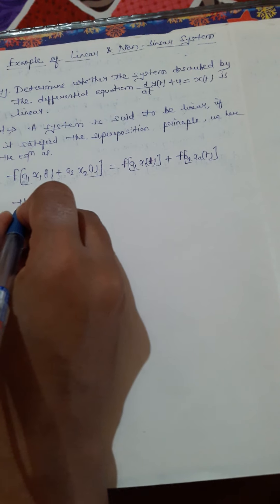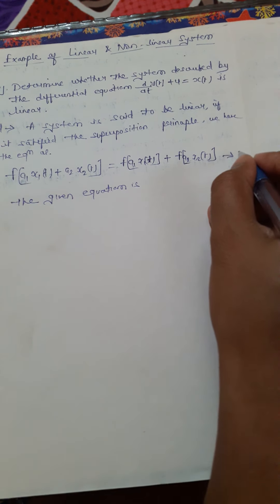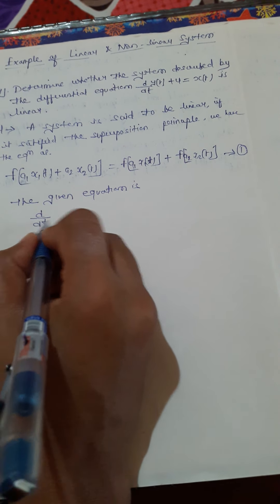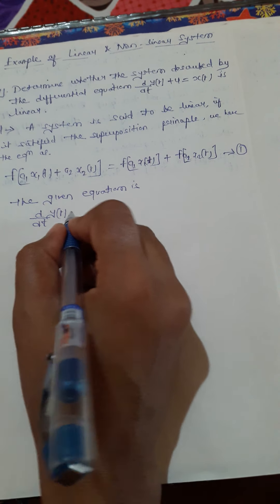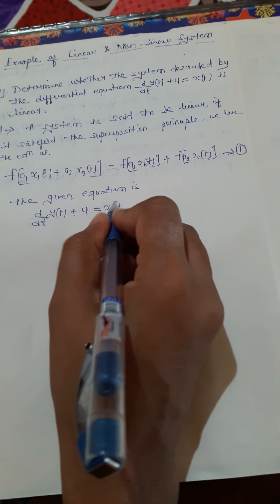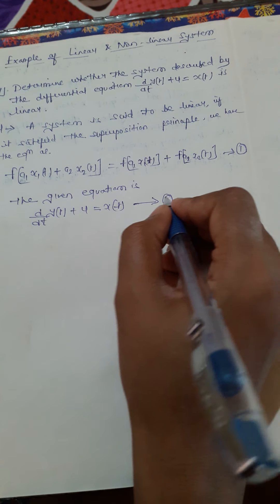Now we have to discuss for the given system. The given equation — we will assign this as equation number one. The given equation is d/dt of y(t) plus 4 equals x(t). We will assign this as equation number two.